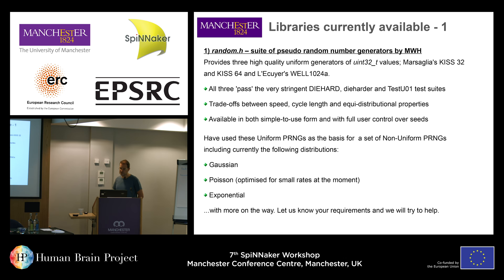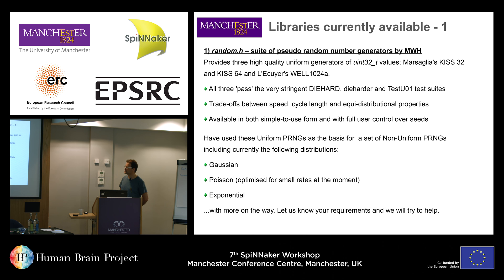Once you have uniform pseudorandom generators you can set up non-uniform ones. People want Gaussian, Poisson, and exponential distributions, and we can generate more. If you want a particular non-uniform distribution not yet in the library, let us know and we can probably generate it quickly. Sometimes they can be slow given the loss of floating-point, but we usually have tricks — for example, the Poisson uses Knuth's integer algorithm, which isn't necessarily the fastest but is a very good algorithm.